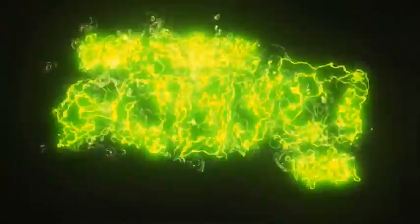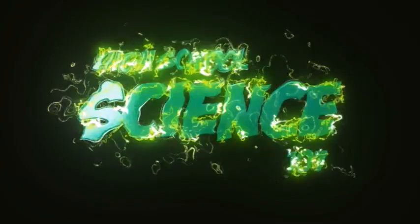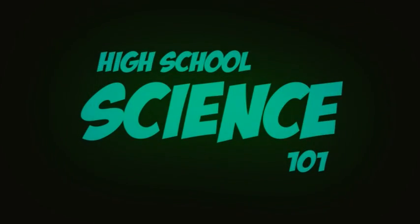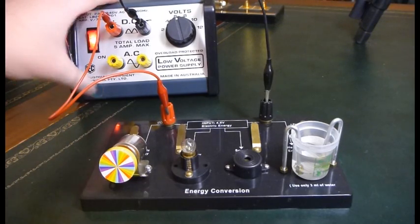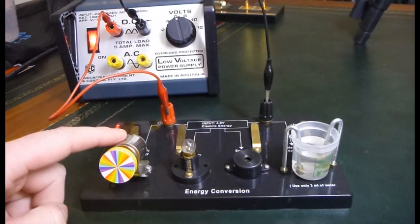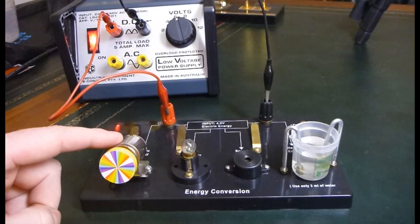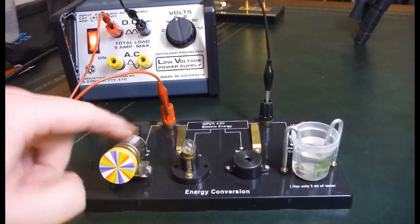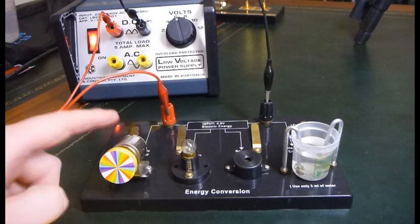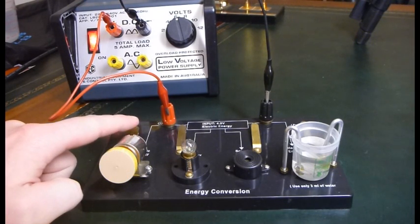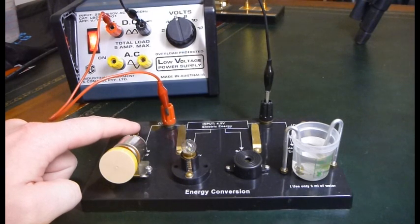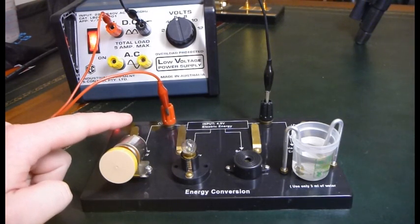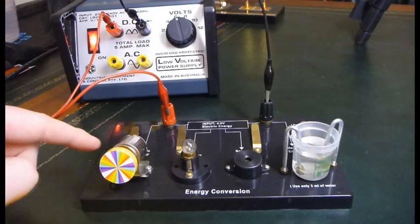And let's have a look. First up we're going to convert our electrical energy into kinetic energy, and kinetic energy relates to anything that has motion. It could be a ceiling fan, it could be a car, in this case it's this little motor. So let's check it out. So that's electrical to kinetic.